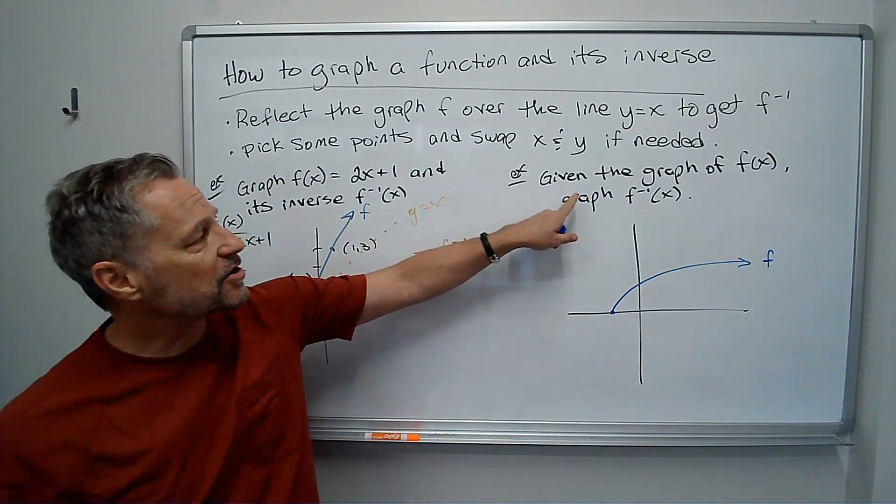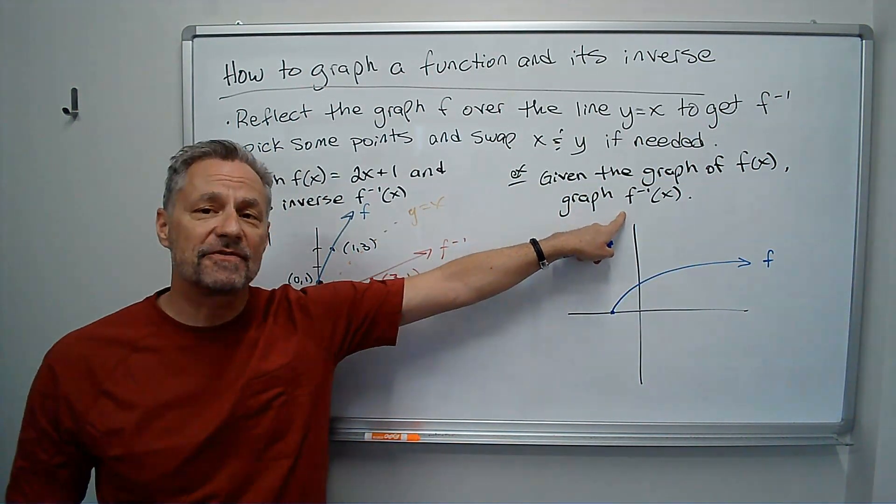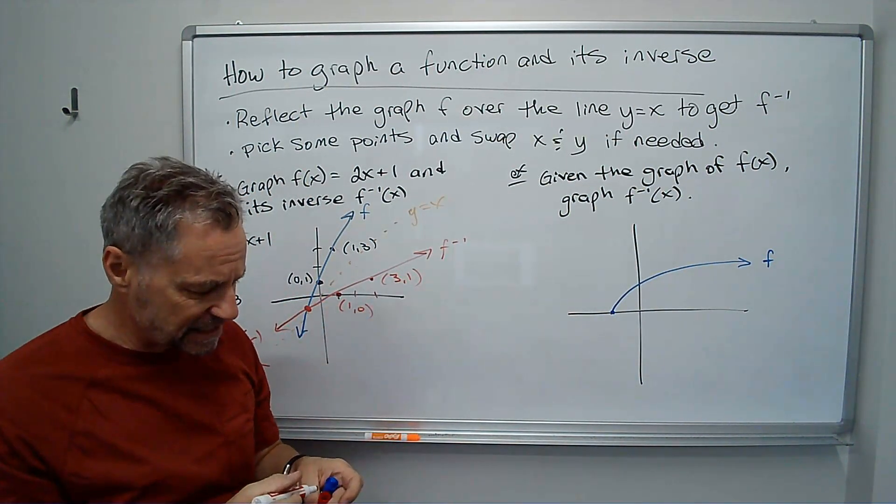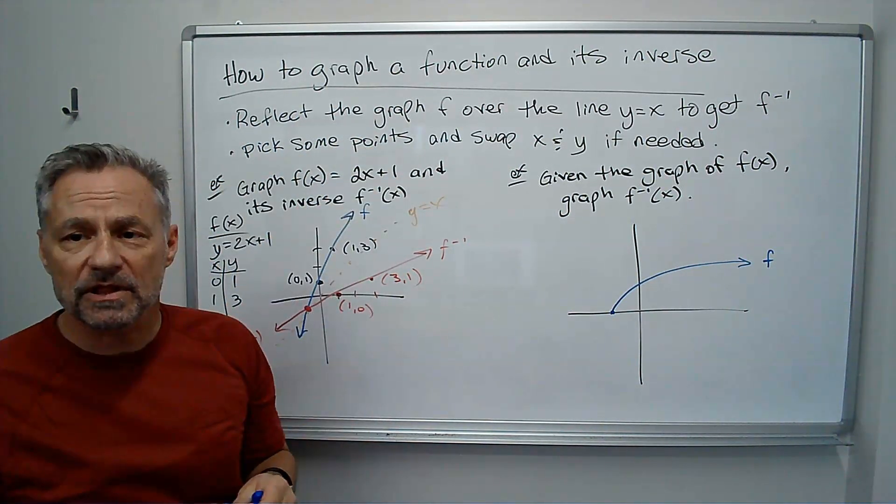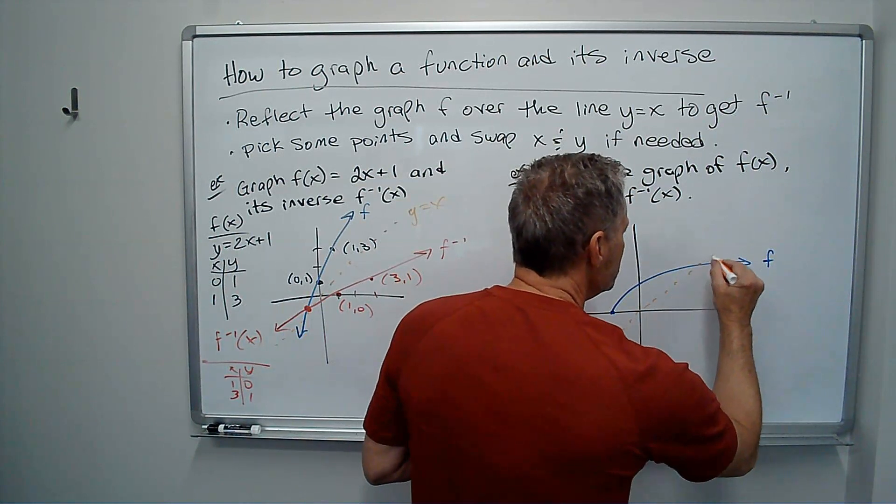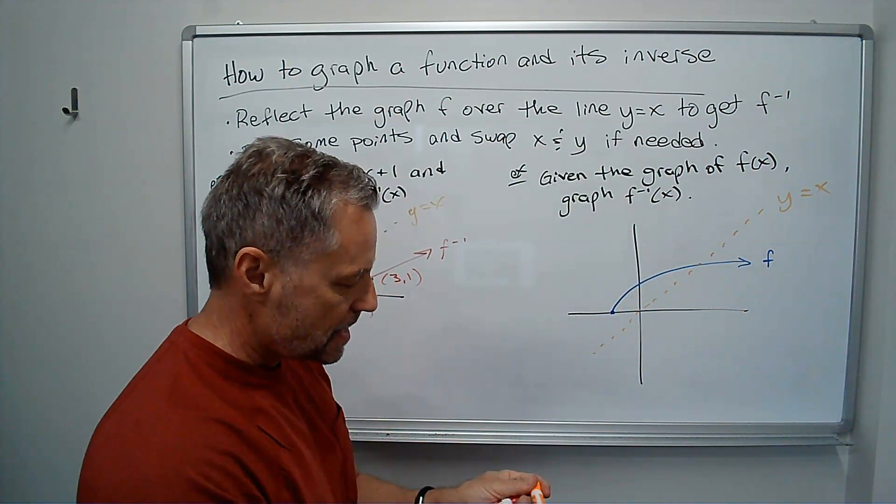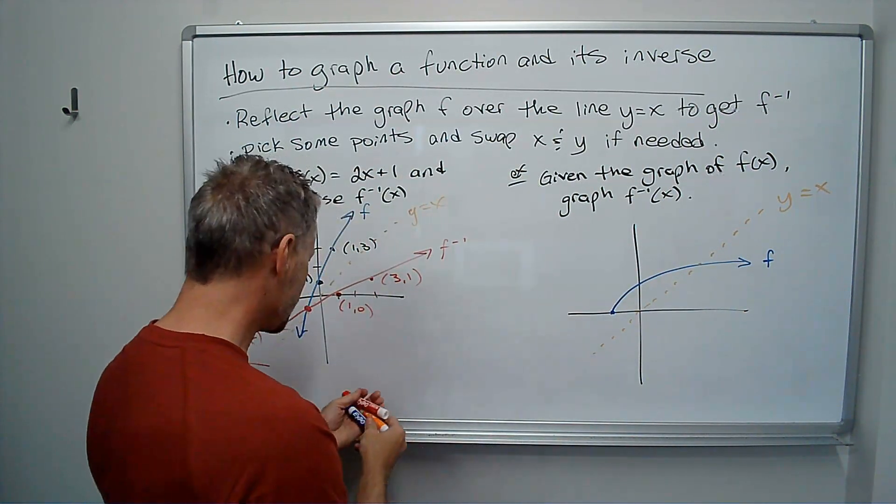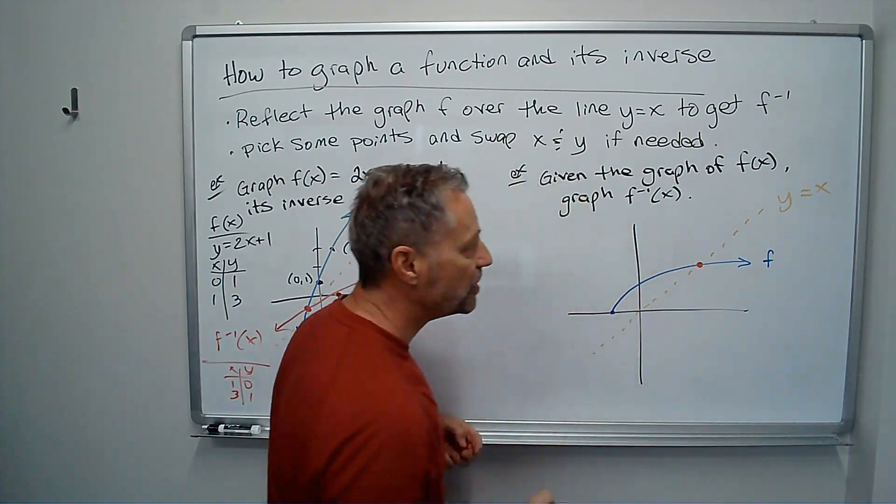So now I've got a graph. Given the graph of f of x, this blue graph, graph f inverse of x. I don't have an equation. I don't have points. I can kind of guess what the points are. But I'm going to do this other trick. I'm just going to reflect over the line y equals x. So the line y equals x is going to go straight up through here. And I know since this point's on the line, I'm going to have that as one of my graphing points. So that's going to be a point on f inverse.